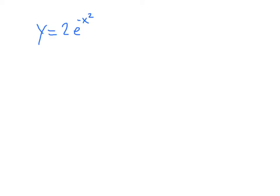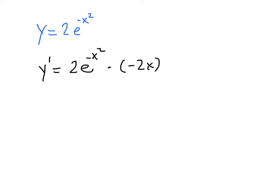Let's start by finding the second derivative. To do that, we'll need the first derivative, y prime. y prime is going to be 2e to the negative x squared times the derivative of negative x squared, which is negative 2x. That's the chain rule. So this whole thing is negative 4x times e to the negative x squared. That's the first derivative.